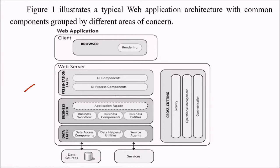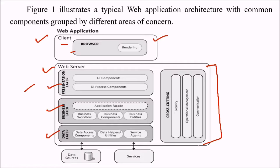The typical web application architecture includes common components grouped by area of concern. You have a client or browser acting as the client-side interface. Between layers, there are umbrella design issues such as security, operational management, and communication. The presentation layer contains user interface and process components. The business layer includes the application facade, business workflow, business components, and business entities. The data layer interacts with data sources and services through data access components, data helpers or utilities, and service agents.